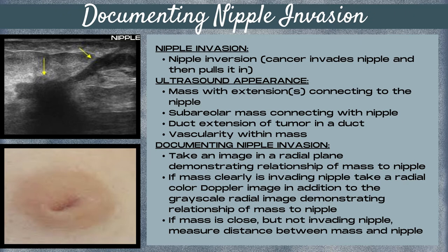If the mass is close but not invading the nipple, then you want to measure the distance with the calipers between the mass and the nipple. This communicates to your radiologist that you don't see a clear extension of the mass to the nipple and shows how far away it is on the ultrasound. Note there can be tiny spiculations we can't visualize on ultrasound — this is just saying that visually there's no obvious connection seen.